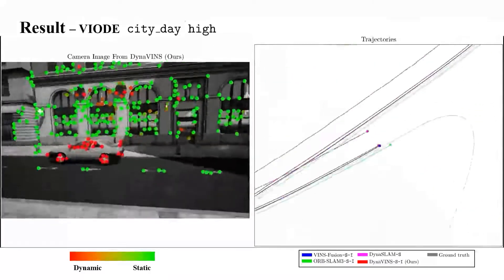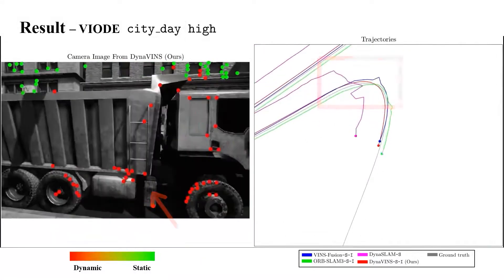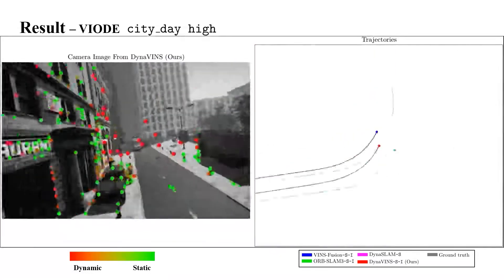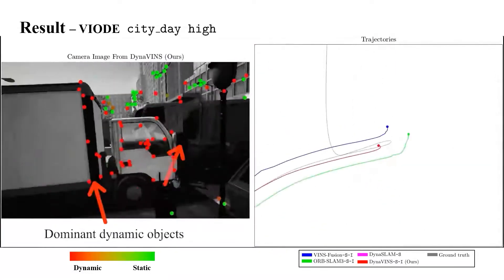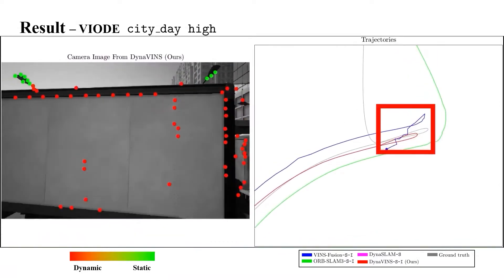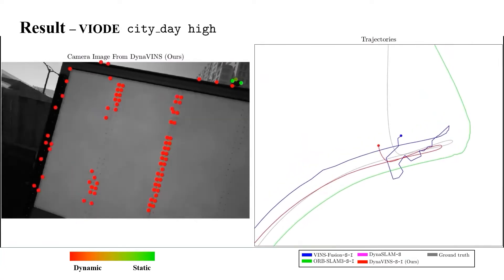Other algorithms are affected by dynamic objects while ours is stable. Dynaslam lost the track due to the scale issue. When there are dominant dynamic objects, ORB-Slam is diverged and VIN's fusion is being unstable, while ours is stable using very few features from static objects.